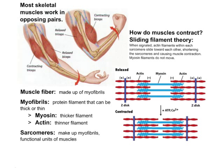Most skeletal muscles work in opposing pairs. For example, the bicep muscle on the front of the upper arm — when it contracts, the lower arm is pulled up. When the opposing muscle, the tricep on the back of the upper arm, contracts, the forearm is moved down. Most muscles work this way so that movement can occur in two different directions.